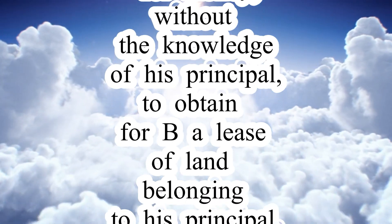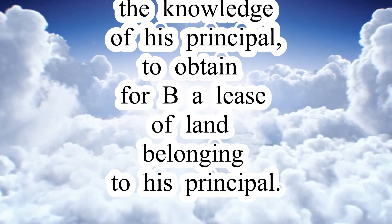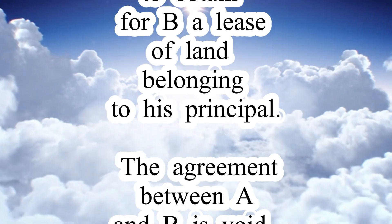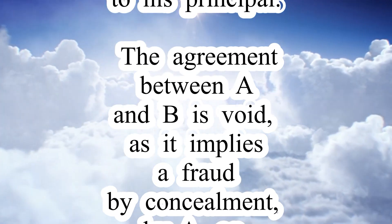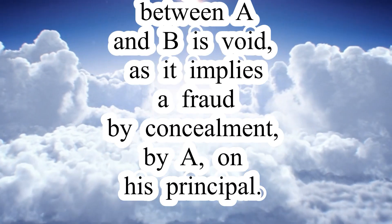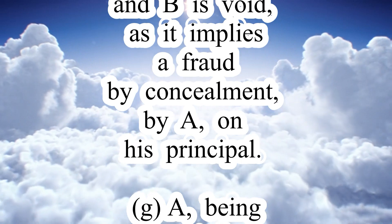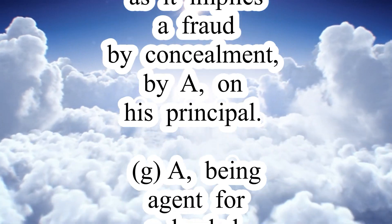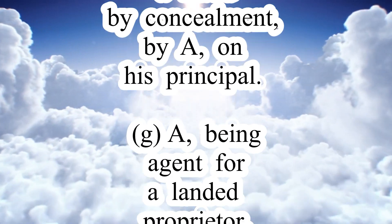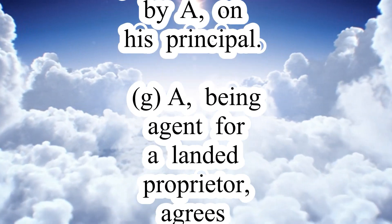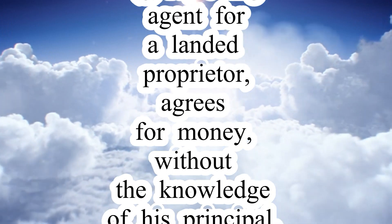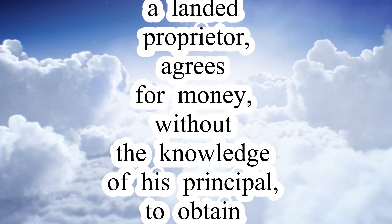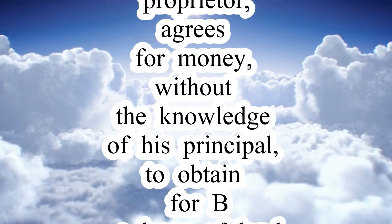Illustration G: A, being agent for a landed proprietor, agrees for money, without the knowledge of his principal, to obtain for B a lease of land belonging to his principal. The agreement between A and B is void, as it implies a fraud by concealment by A on his principal.